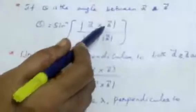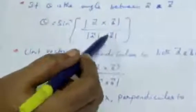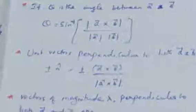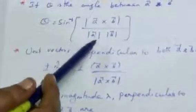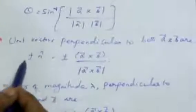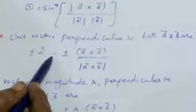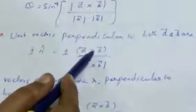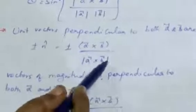If theta is the angle between A vector and B vector, then theta equals sine inverse of modulus of A cross B divided by modulus of A into modulus of B. The unit vectors perpendicular to both A and B are plus or minus N cap, which equals plus or minus A cross B divided by modulus of A cross B.